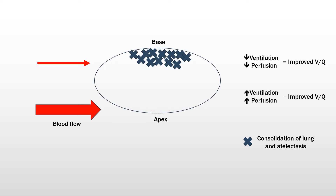When the patient is placed in the prone position, the apex of the lungs, which typically has less consolidation and atelectasis, is now in a position to receive more perfusion, effectively matching the ventilation to perfusion and reducing the shunt. This position is also advantageous as it allows for recruitment of collapsed alveolar units, mobilization of secretions, and improved functional reserve capacity.